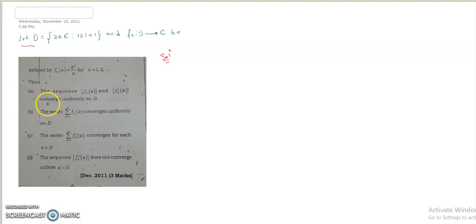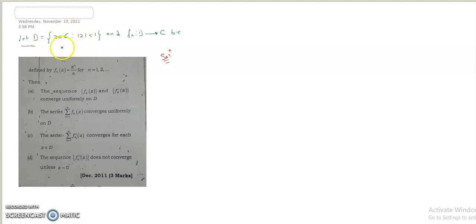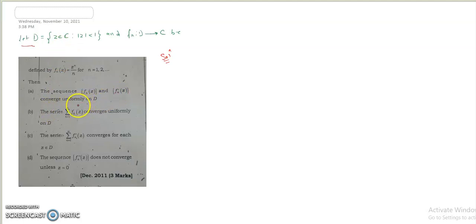Let D be the open unit disk, and let fn: D → C be a function defined by fn(z) = z^n / n, for all n = 1 to infinity. The sequence fn(z) and fn'(z) — we check whether they converge uniformly.